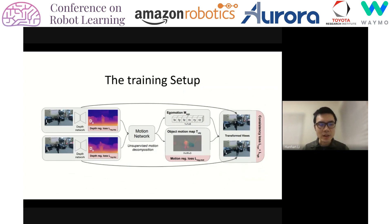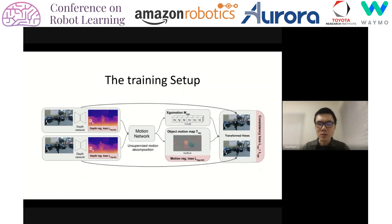Here's the training setup. We have two networks: the depth network and the motion network, both based on a U-Net architecture. The depth network produces the depth map from a single image, and during training we apply it independently on the two frames. The motion network produces the ego motion vector and the object motion map from a pair of frames and their associated depth maps. We use the motion information to transform one frame to another and apply consistency between the two views. We also apply regularization loss on the depth map and the motion map, doing end-to-end training of both networks.